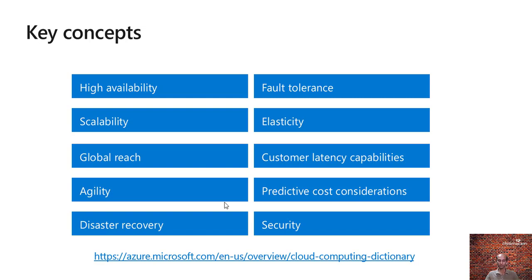For changes in workload — that is, the number of users or requests — there are two concepts: scalability and elasticity. Scalability is the ability of a service to process an increase in load by either scaling up, which is vertical scaling, or scaling out, which is horizontal scaling. Scaling up or vertical scaling can be achieved by adding additional capacity to a service or resource. For example, if I have a virtual machine, I can increase the capacity by adding RAM, disk space, CPU, and so on.